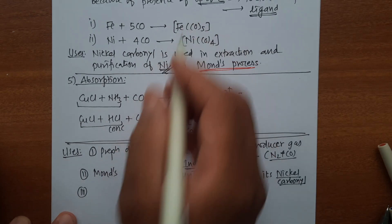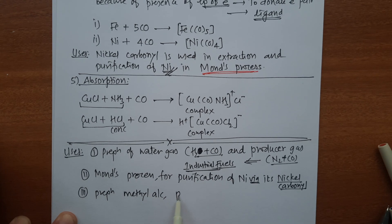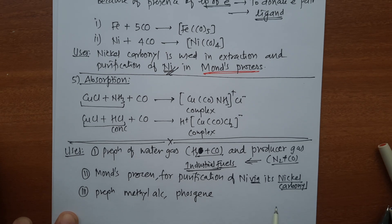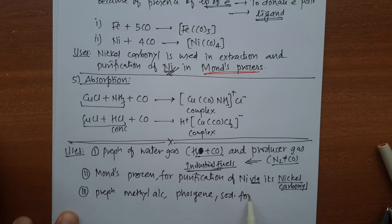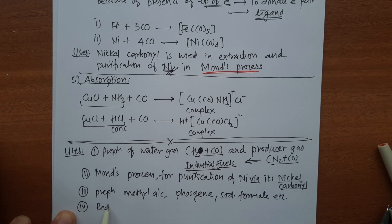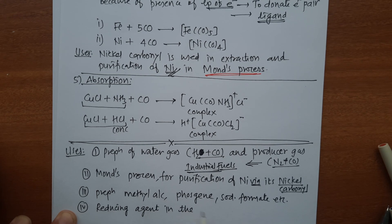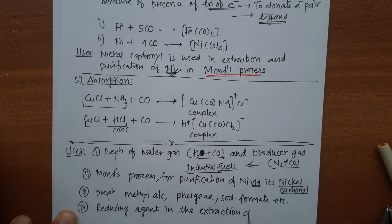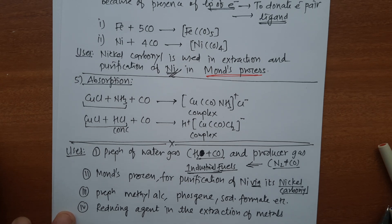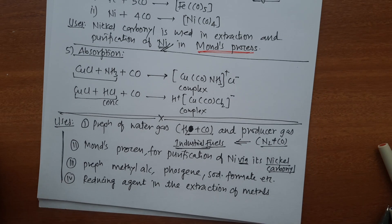Carbon monoxide is also used for the preparation of important compounds such as methyl alcohol, phosgene, and sodium formate. It is used as a reducing agent in the extraction of metals. These are the common uses of carbon monoxide.